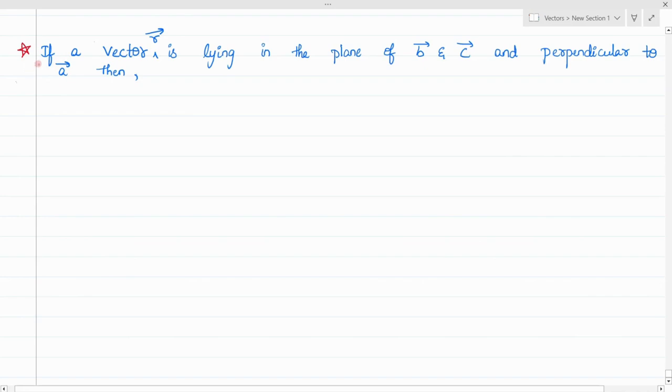There is an important note over here. If a vector R is lying in the plane of vector B and C and perpendicular to vector A, then this R vector is nothing but the triple product, which is A cross B cross C. So here the R vector is perpendicular to vector A, and R vector is coplanar with B and C because it is lying in the plane of B and C.